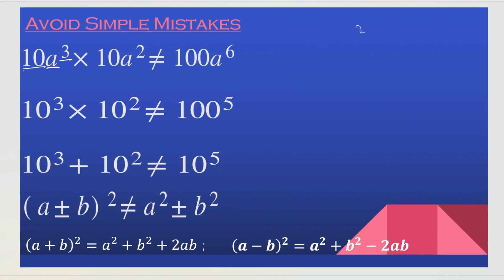The next one. Here, they used the product rule but they multiplied the base, and that is the mistake. You don't multiply the base. So really, the answer is going to be 10 to the exponent of 3 plus 2. And 3 plus 2 equals 5, so the answer is going to be 10 to the exponent of 5.